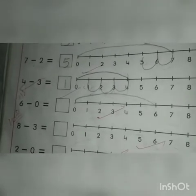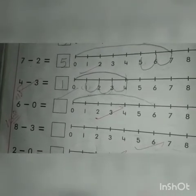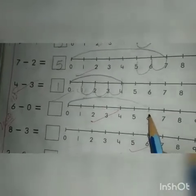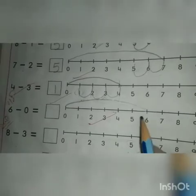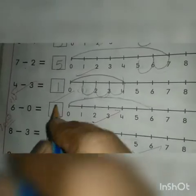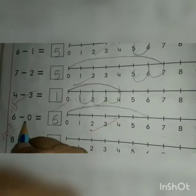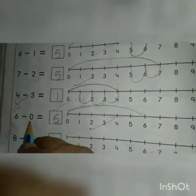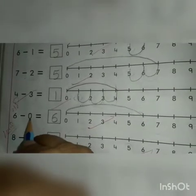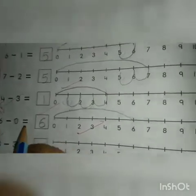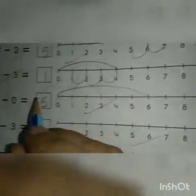And next number is 0. Where will you stop? At number 6. Now our answer is 6. Now we will write number 6. 6 minus 0 is equal to 6.